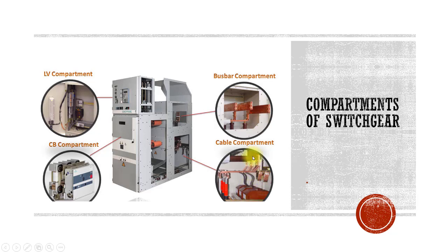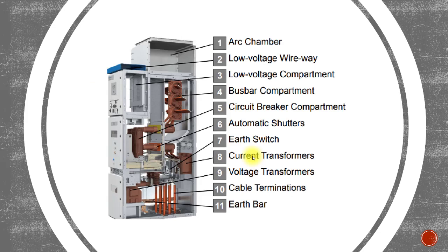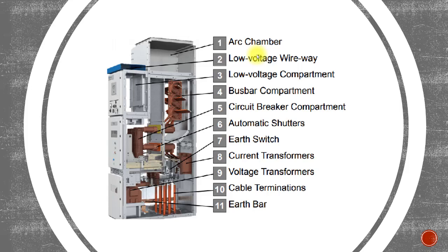You can also see the connection for the voltage transformer installed in the cable compartment. Now looking at another type of switchgear design: number one is the arc chamber. Most companies are now going for the arc chamber. The reason is that if there is any arc in any compartment, flappers are provided, and if there is an arc in the busbar compartment or circuit breaker compartment, these flappers will open with the pressure and direct the arc through this arc chamber, which is normally required to vent outside of the building.